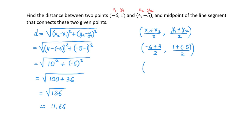Negative 6 plus 4 is negative 2, divided by 2. 1 plus negative 5 is negative 4, divided by 2. Negative 2 divided by 2 is negative 1. Negative 4 divided by 2 is negative 2. So the midpoint of the line segment that connects the given points has the coordinates (negative 1, negative 2).